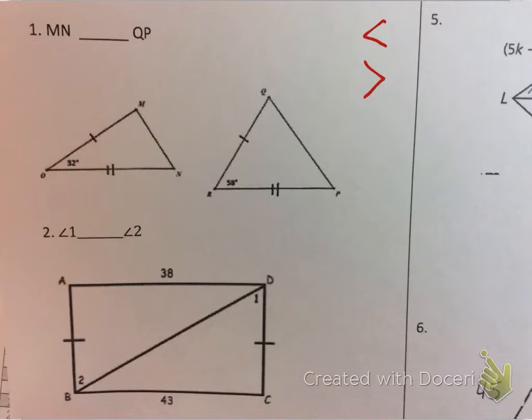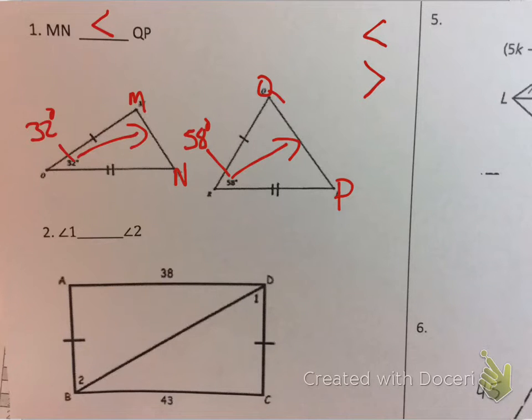All you're basically going to be telling me is, is it less than or greater than? That's it. How do you know? Well, if you look at the first one, this is 32 degrees, this is 58 degrees, and they want to know what is MN versus QP. Okay, well, since the 32 degrees corresponds to the MN, the 58 corresponds to the QP, and 32 is less than 58, then MN is less than QP.